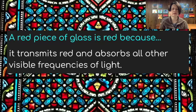A red piece of glass is red because it transmits red and absorbs all other visible frequencies of light. The same with the blue and the yellow and the green in this stained glass window.